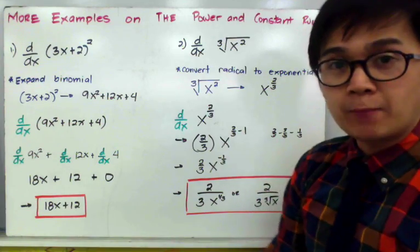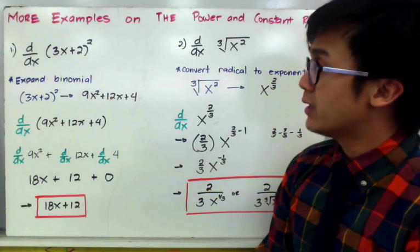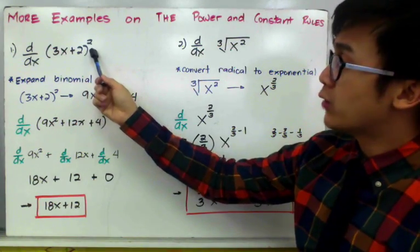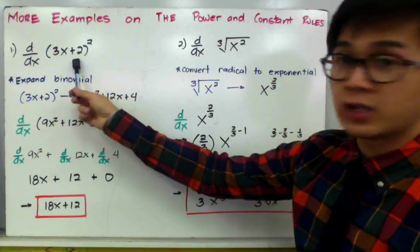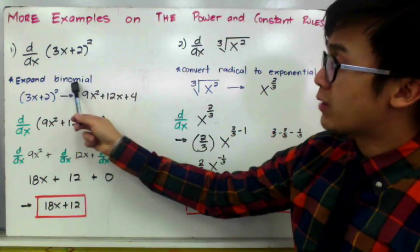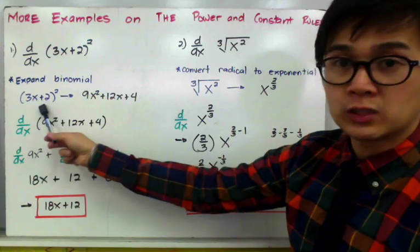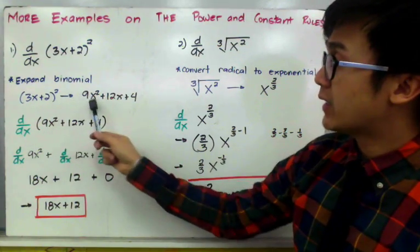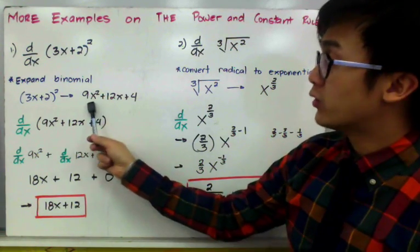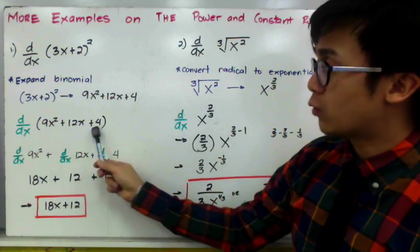For the next few examples, we're going to combine the power and the constant rule in finding the derivative of a certain function. For example number 1, we have 3x plus 2 raised to the second power. What we need to do is simplify our function by expanding our binomial. Expanding 3x plus 2 raised to the second power gives us 9x squared plus 12x plus 4. So now we have the derivative of 9x squared plus 12x plus 4 in terms of x.